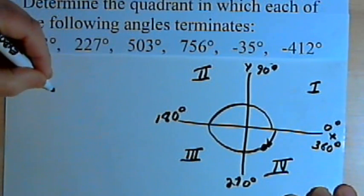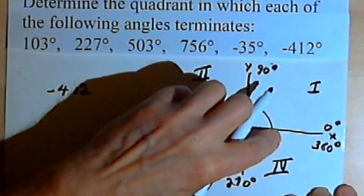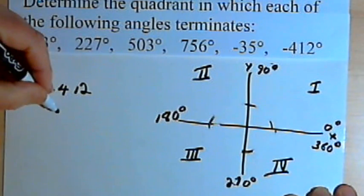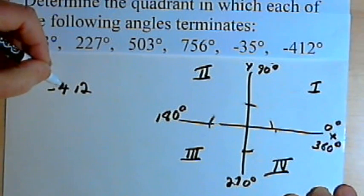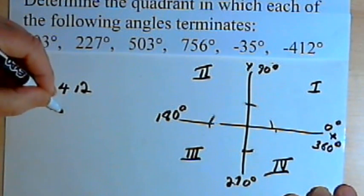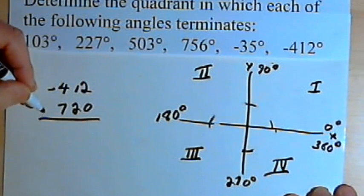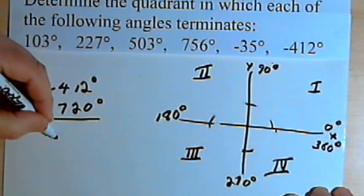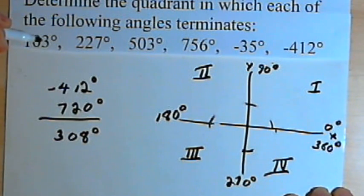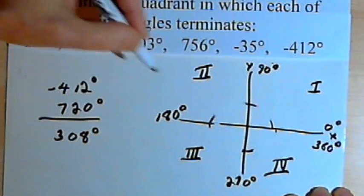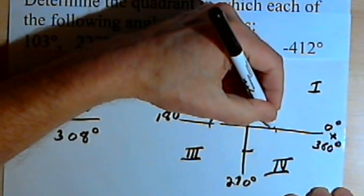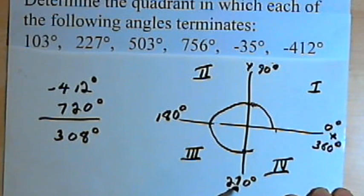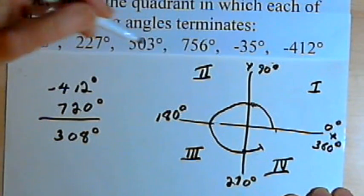For negative 412 degrees, adding just 360 isn't enough, so add 720 degrees. Negative 412 plus 720 equals positive 308 degrees. Going counterclockwise through the first, second, and third quadrants takes us past 270 degrees, and 308 degrees terminates in the fourth quadrant.